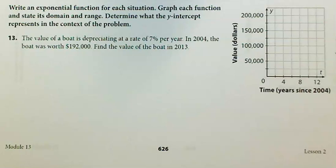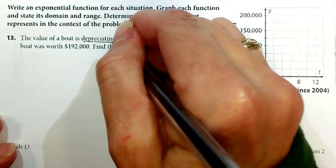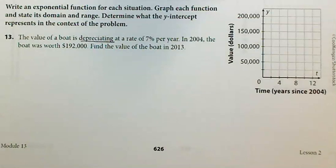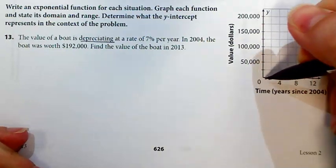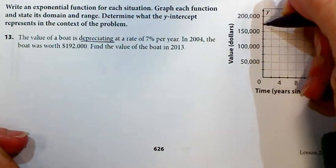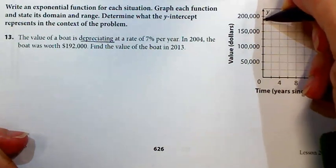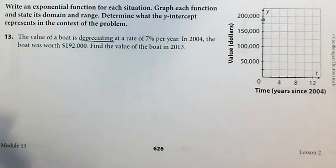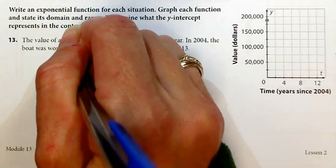Okay, now I'm down at the bottom of page 626 where it says to write an exponential function for each situation, graph each function, state its domain and range, and determine what the y-intercept represents in the context of the problem. It's a lot of wordy stuff, but this is all stuff that you've been doing. The value of a boat is depreciating at a rate of 7% per year. This is one of those words that I pointed out to you - depreciate means that it's losing value. In 2004, the boat was worth $192,000. All right, so 2004, that would be zero years since 2004, the boat is worth $192,000. So first I'm going to start constructing my equation.